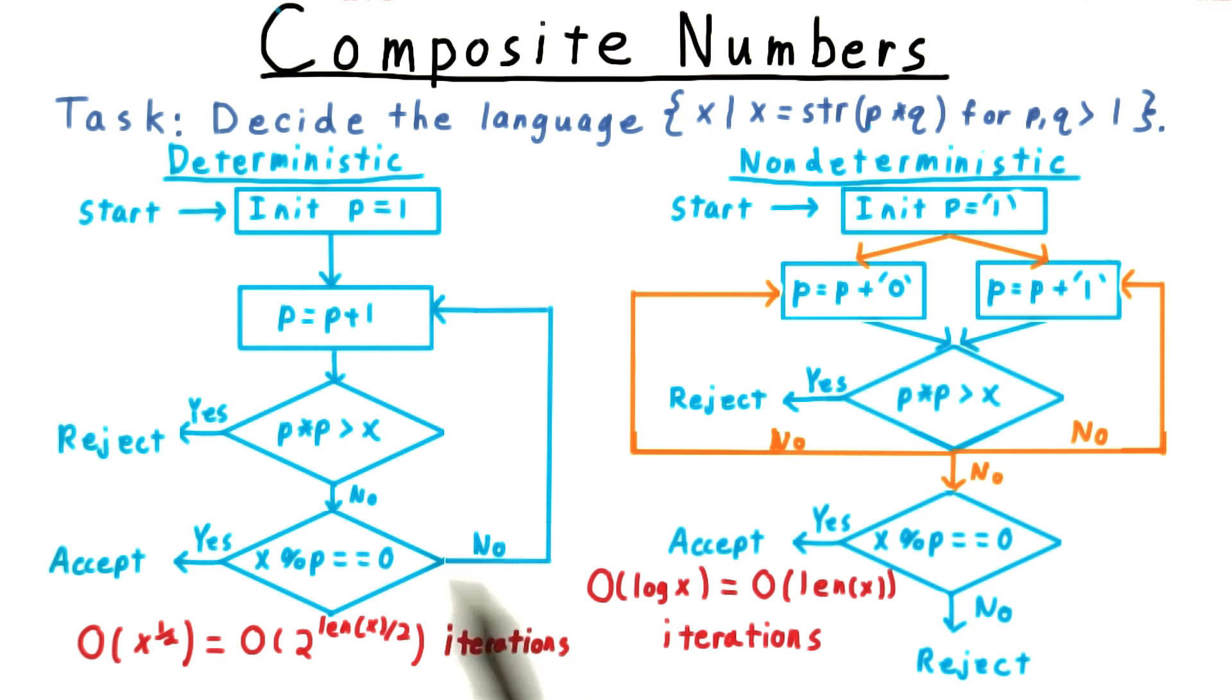Thus, while the deterministic algorithm we came up with was exponential in its input length, it was fairly easy to come up with a nondeterministic one that was polynomial.